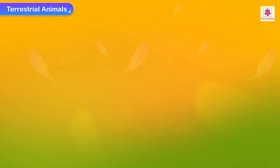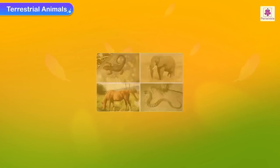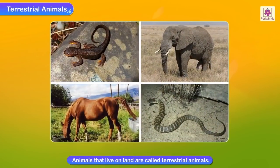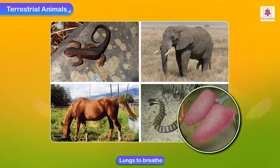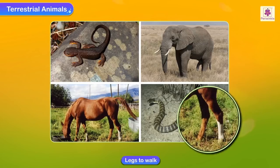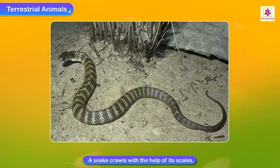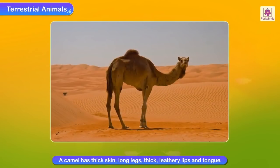Terrestrial animals are animals that live on land. They generally have lungs to breathe and legs to walk. A snake lives on land but has no legs — it crawls with the help of its scales. A camel lives in the hot dry desert.